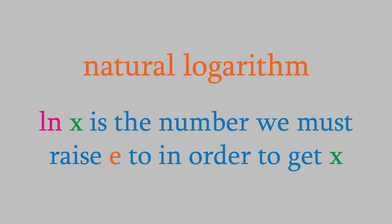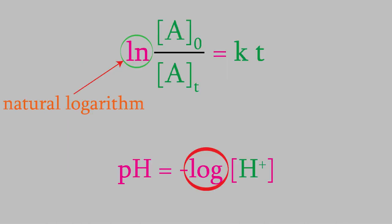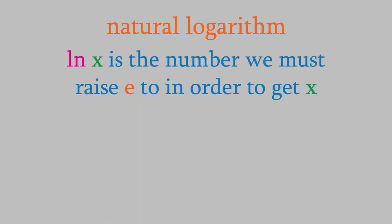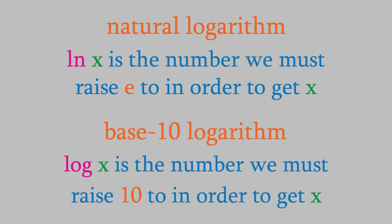That's different from the logarithm we're using in the pH equation. This time, we're using what's called the base-10 logarithm, which has log as the symbol instead of ln. The base-10 logarithm has a definition that's similar to the one that we learned for natural logs. It's the exponent we must raise 10 to in order to get the number we're taking the logarithm of. So, for example, the logarithm of 1,000 is 3, because we must raise 10 to the exponent 3 in order to get 1,000.